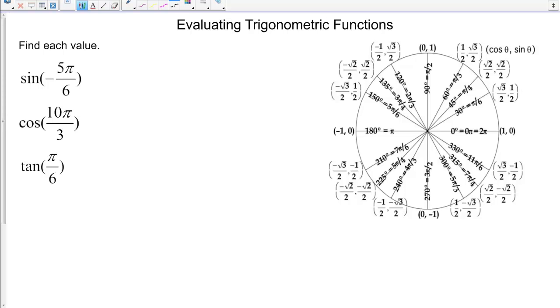The sine of negative π over 6. We have to go around clockwise. Our reference angle is going to be π over 6. Find that point in the first quadrant. Sine is our y-value, so that's 1/2, and in the third quadrant we have a negative y-value, so that's negative 1/2.